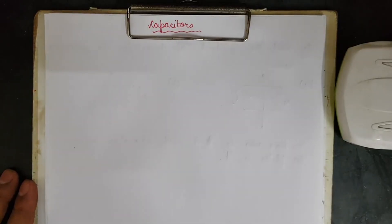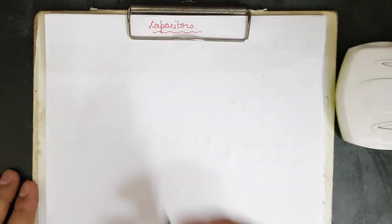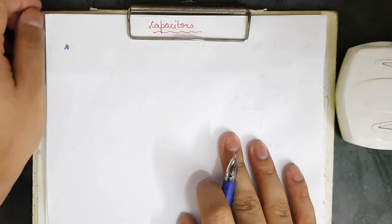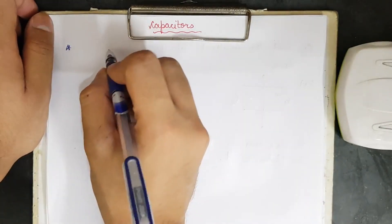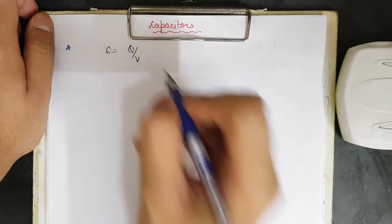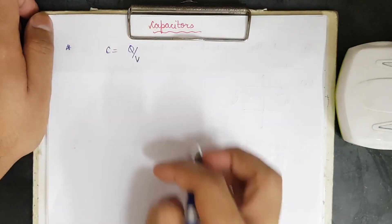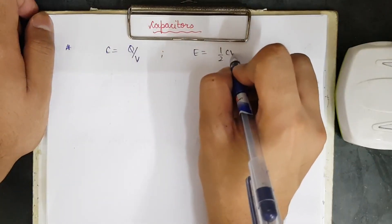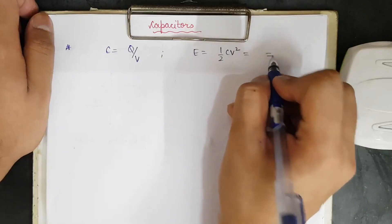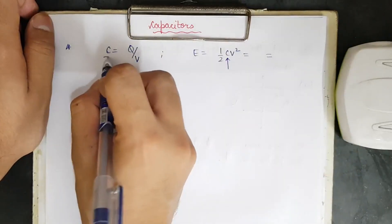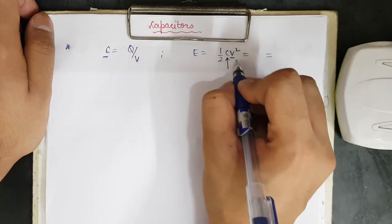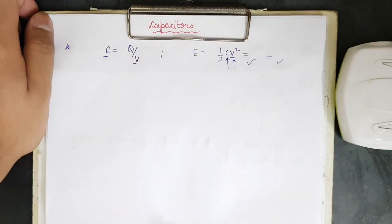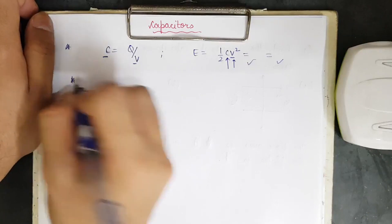Welcome to the video on capacitors. Let's begin with a few basic topics. The capacitance is given by charge upon potential. The energy is given by half CV squared, which can be converted into two other forms by replacing the value of C or by replacing the value of V to get two different expressions.